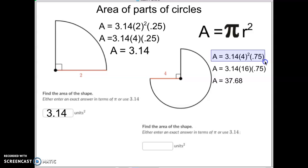First step is we're going to take 4 and square it. 4 times itself is 16. And then we're just going to multiply 3.14 times 16 times 0.75, which is 37.68.